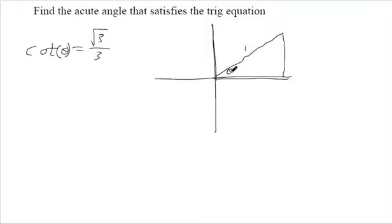Now we've got to figure out what angle goes in here. Wait, it's cotangent, so its adjacent divided by opposite would be square root of 3 over 3.